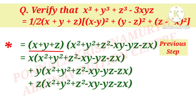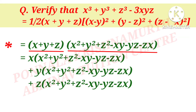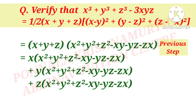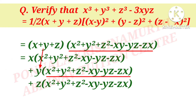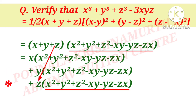Now we have to multiply (x + y + z) and (x² + y² + z² − xy − yz − zx). That is equal to x(x² + y² + z² − xy − yz − zx) plus y(x² + y² + z² − xy − yz − zx) plus z(x² + y² + z² − xy − yz − zx).